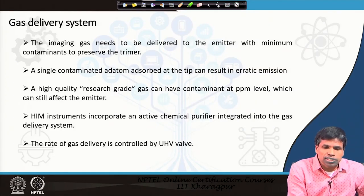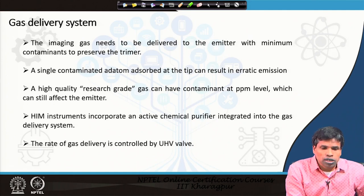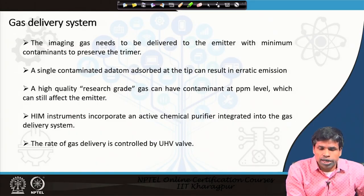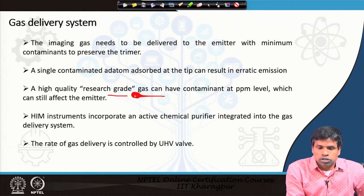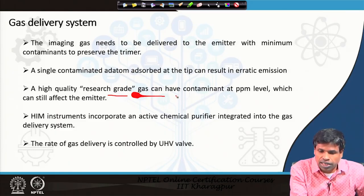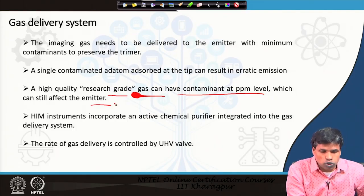The gas delivery system needs to deliver the imaging gas to the emitter with minimum contaminants, to preserve the trimer. Even a single contaminated atom adsorbed at the tip can result in erratic emission. High-quality, research-grade gas should be used, but even research-grade gas has contaminants at the PPM level and can affect the emitter; therefore, it can be further purified.